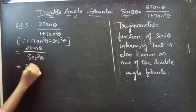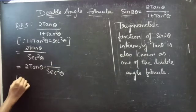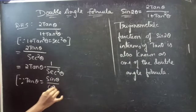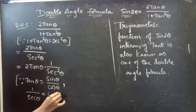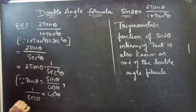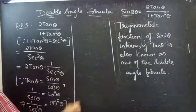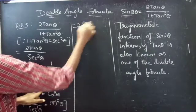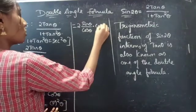So you could write it as 2tanθ × (1/sec²θ). Since tanθ = sinθ/cosθ, and the reciprocal of secθ is cosθ, if you square both sides you get 1/sec²θ = cos²θ. So this becomes 2 × (sinθ/cosθ) × cos²θ.